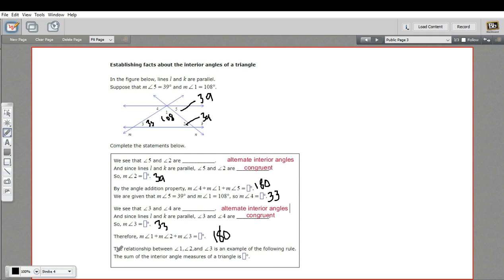So the last part here says the relationship between angles one, two, and three, those are the ones inside the triangle, is an example of the following rule: the sum of the interior angle measures of a triangle is 180 degrees. So maybe you knew that already. You've heard that before. But what this does is it offers a kind of proof for why that's the case. So that's a little bit of work in which we establish some facts about the interior angles of a triangle.